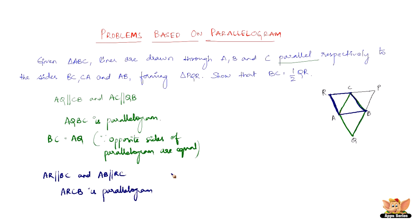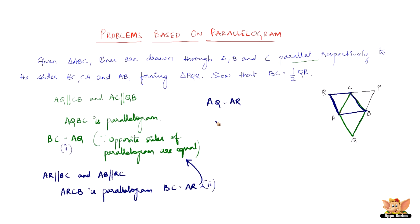Therefore, BC equals AR — again, opposite sides of a parallelogram are equal. Taking BC = AQ as equation 1 and BC = AR as equation 2, we can clearly say AQ equals AR.